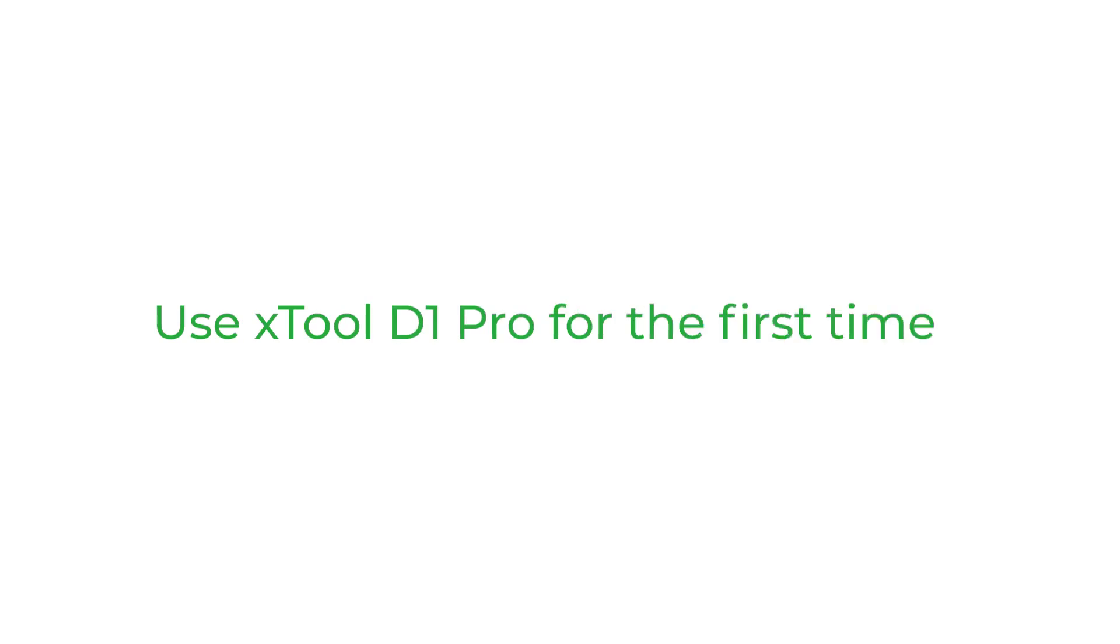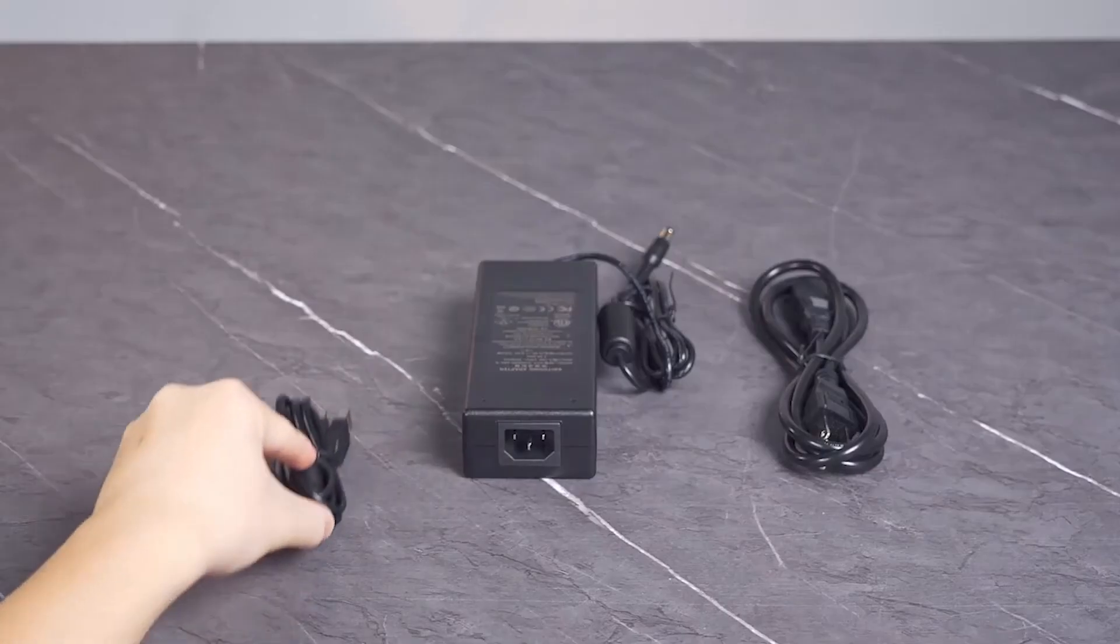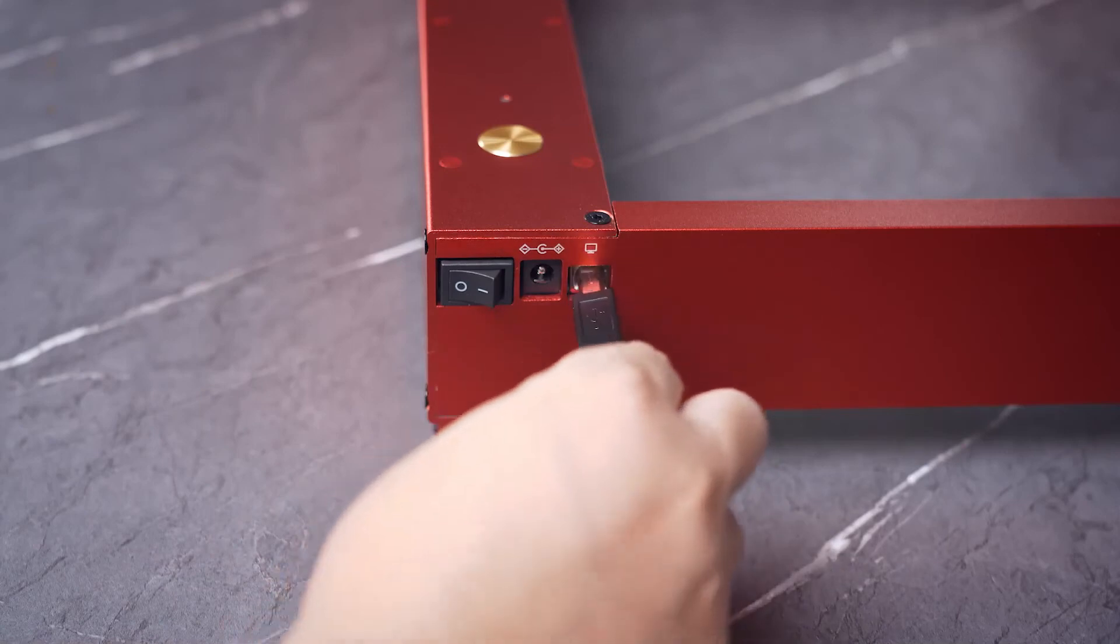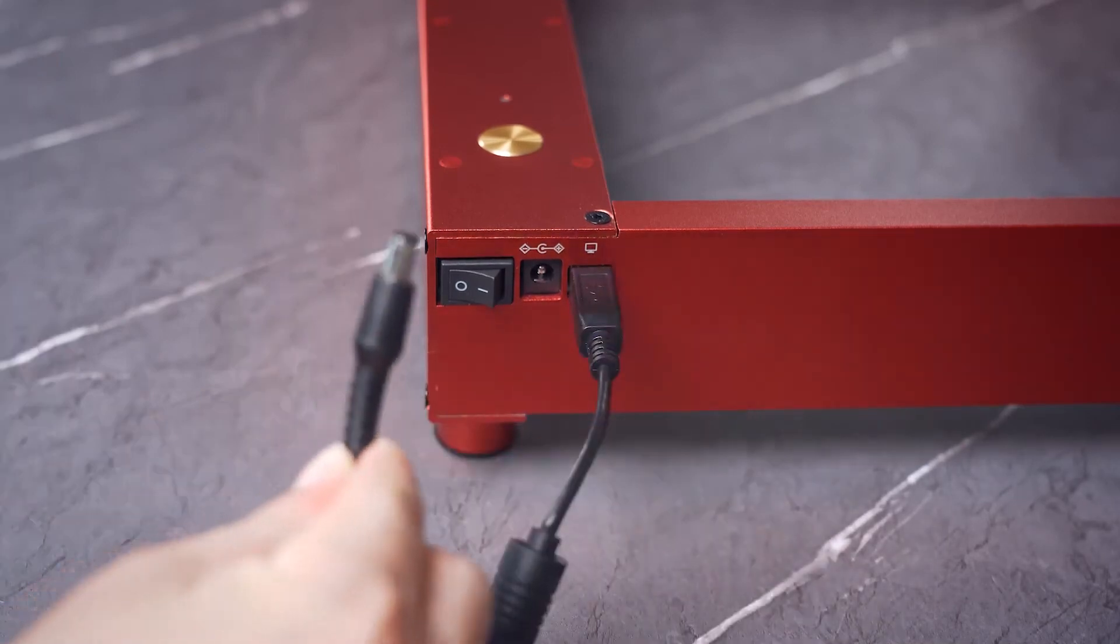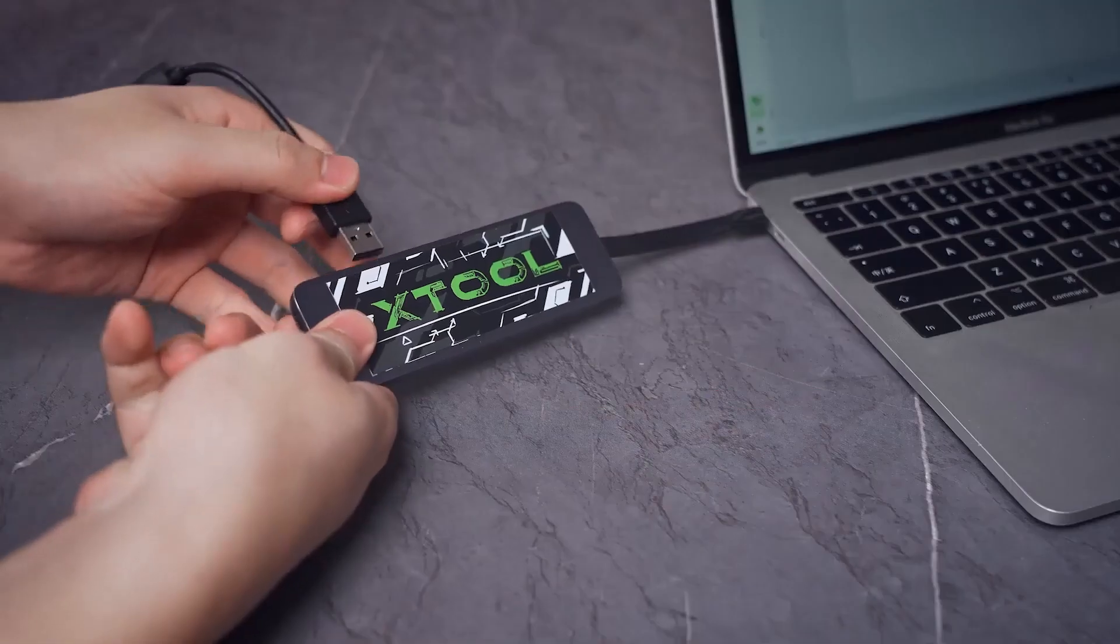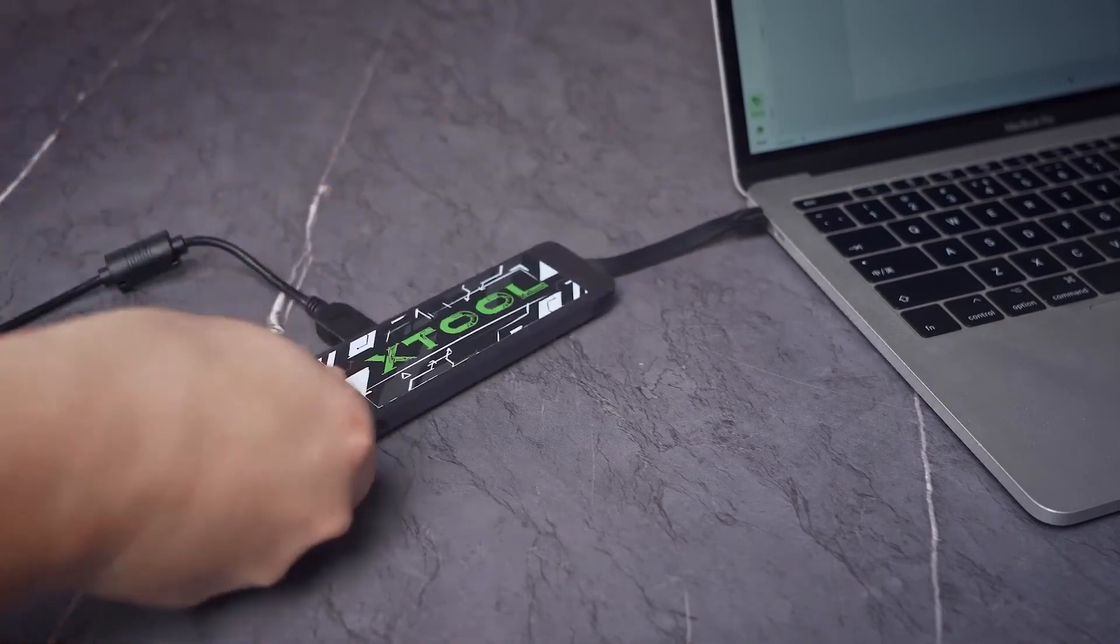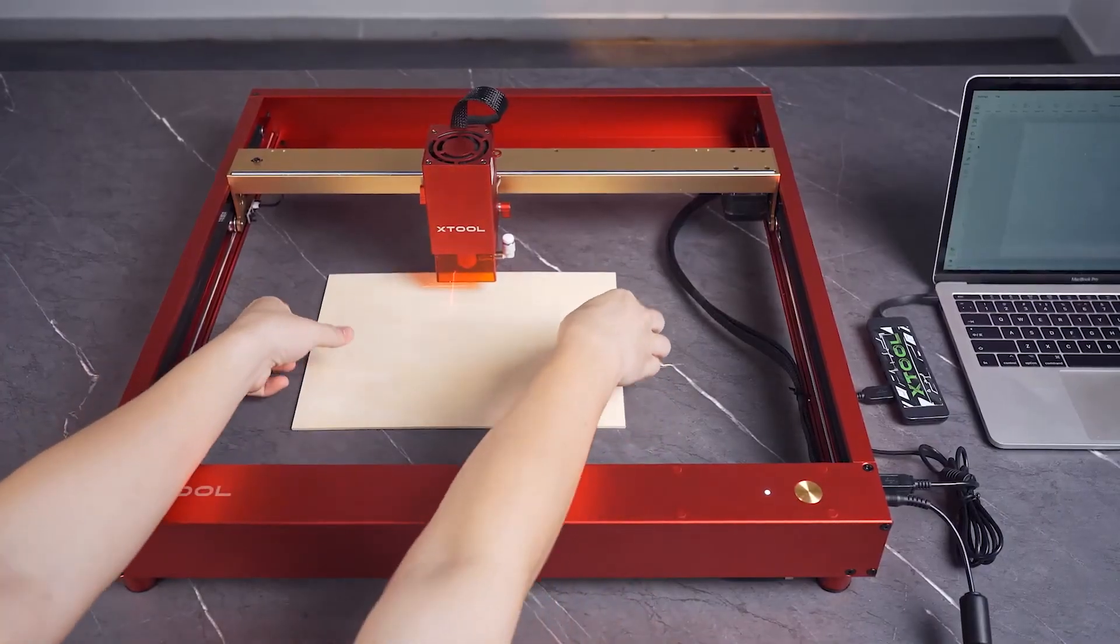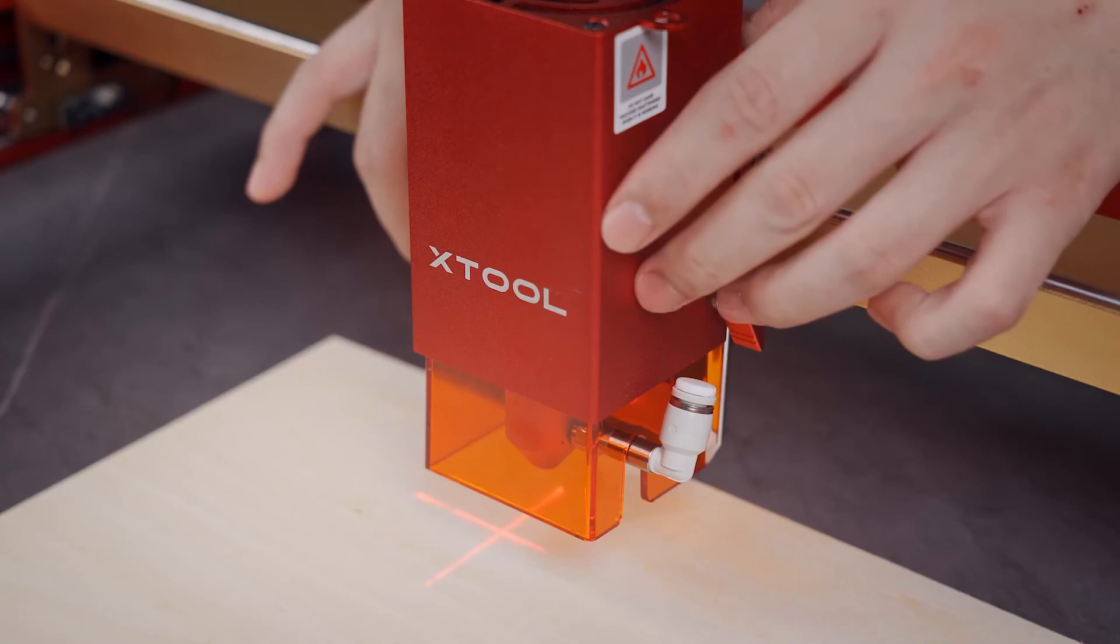Use XTool D1 Pro for the first time. Connect your device to a computer and power supply. Place the material to be processed. Set the position of the laser module.